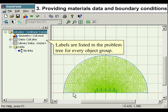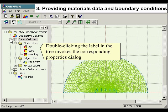Labels are listed in the problem tree for every object group. Double-clicking the label in the tree invokes the corresponding properties dialog.